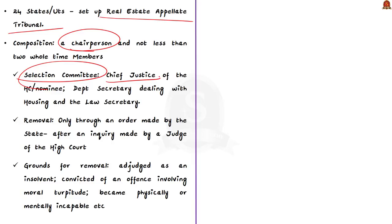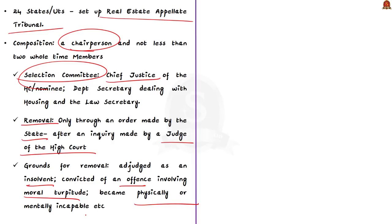The chairperson and members of the Real Estate Authority can be removed only through an order made by the state after an inquiry conducted by a judge of the High Court. The grounds for removal include: being adjudged as insolvent, convicted of an offense, involvement in moral turpitude, or becoming physically or mentally incapable.